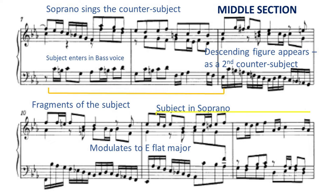Next, we have the middle section of the fugue. It has an interesting figure of a descending scale, and this builds into a sequence. Bar ten is a sequence of bar nine. What we have here is a short episode before the subject enters at bar eleven.